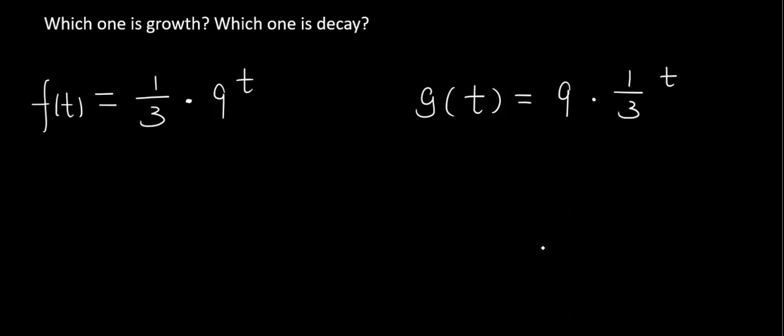Let's look at f of t. The initial value a is one-third, b is nine. Let's look at g of t. Initial value a is nine, b is one-third.